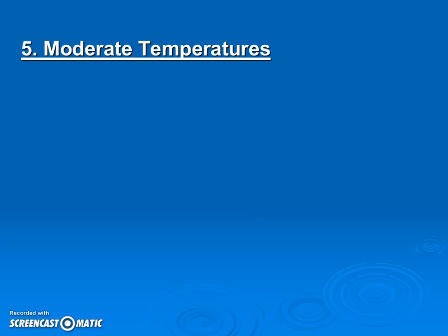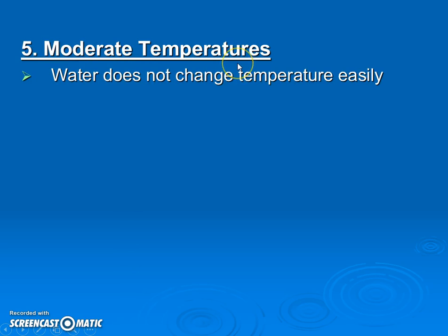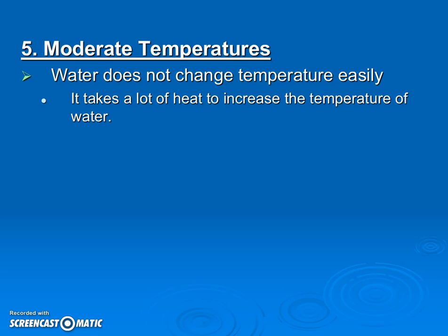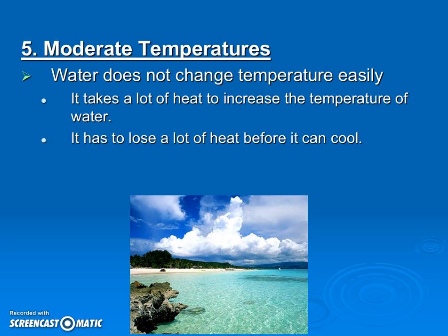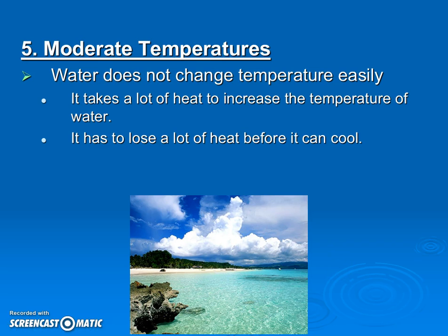The fifth property is that water moderates, or stabilizes, temperature — meaning water resists changing temperature. It takes a lot of heat to increase the temperature of water, and it also takes a long time for it to cool down. If you go to the beach in early summer in June, the water is still cold — it doesn't really warm up until August. I like to call this water being stubborn: it doesn't change temperatures easily.